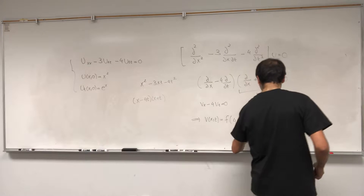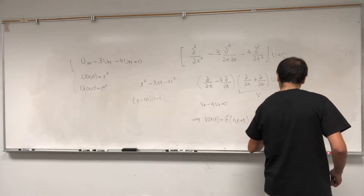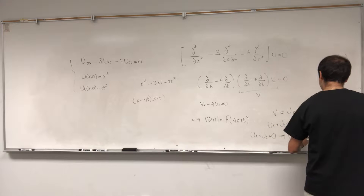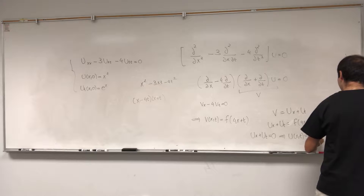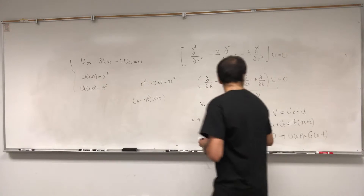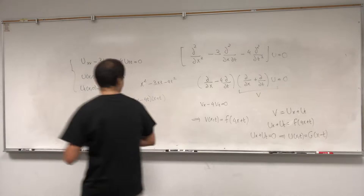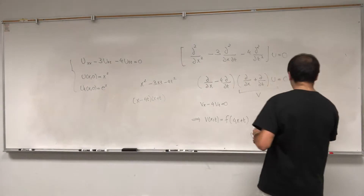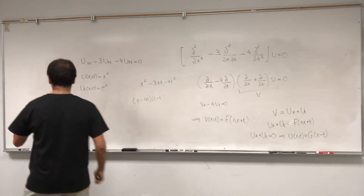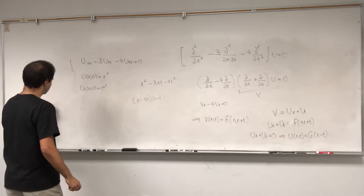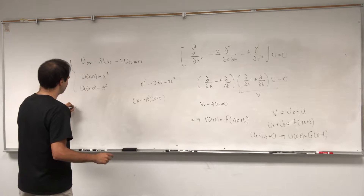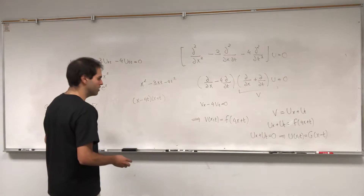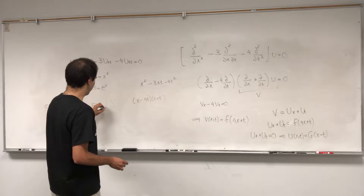So let's first solve ux plus ut equals zero. That gives u(x,t) equal to any function of x minus t. Then you want to find a particular solution. Because the right-hand side is f(4x plus t), just guess capital F — the antiderivative of f(4x plus t). We just want to find one particular solution, so guess u(x,t) as a·F(4x plus t).